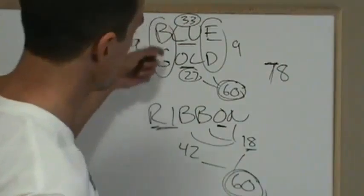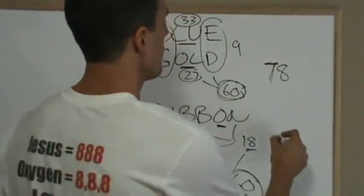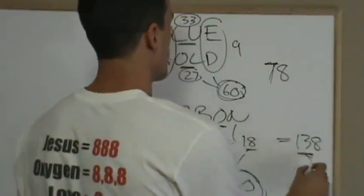In the divine combination of blue and gold, now add the word ribbon to have a blue and gold ribbon. And now you get up to 138, which divides by 3, obviously.